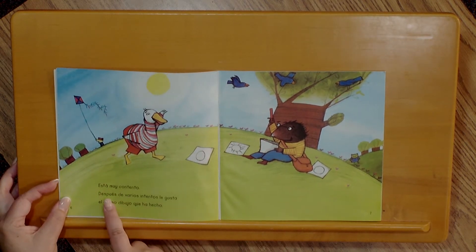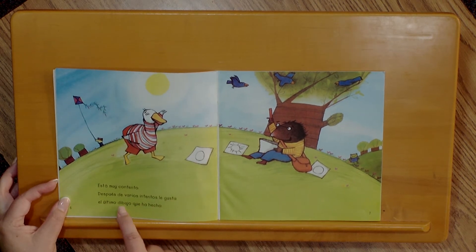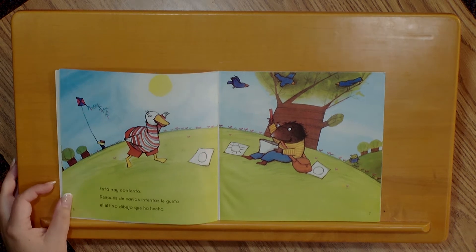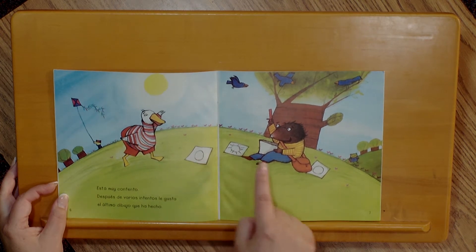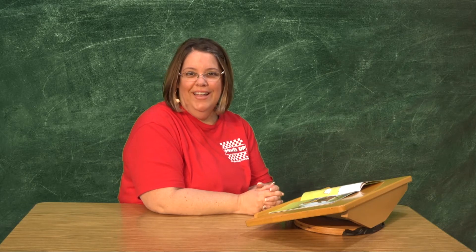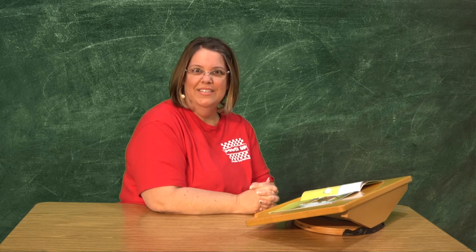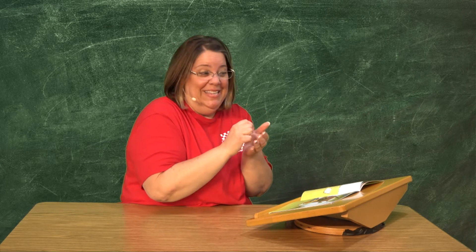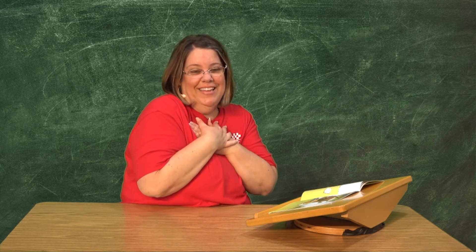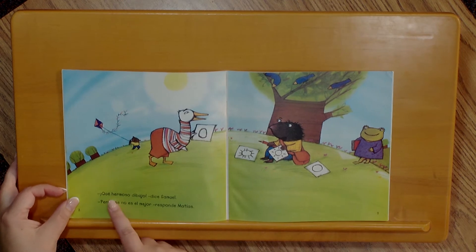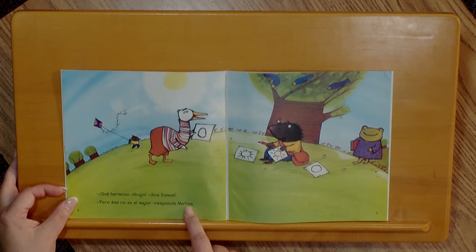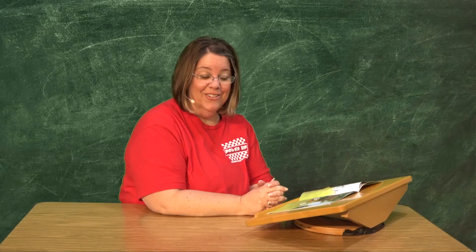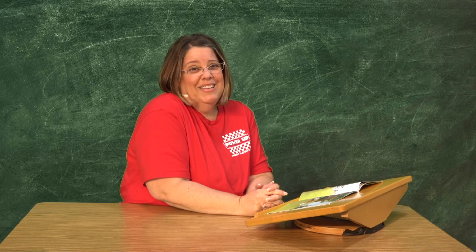Está muy contento. Después de varios intentos, le gusta el último dibujo que ha hecho. Entonces, Matías hizo varios dibujos. No hizo solamente un dibujo, hizo uno, dos, tres dibujos. Cuando ustedes dibujan, ¿solamente lo hacen una vez o a veces lo hacen varias veces? Yo también, a veces me equivoco y tengo que borrar y hacerlo otra y otra vez, hasta que a mí me guste. ¡Qué hermoso dibujo!, dice Samuel. Pero ese no es el mejor, responde Matías.